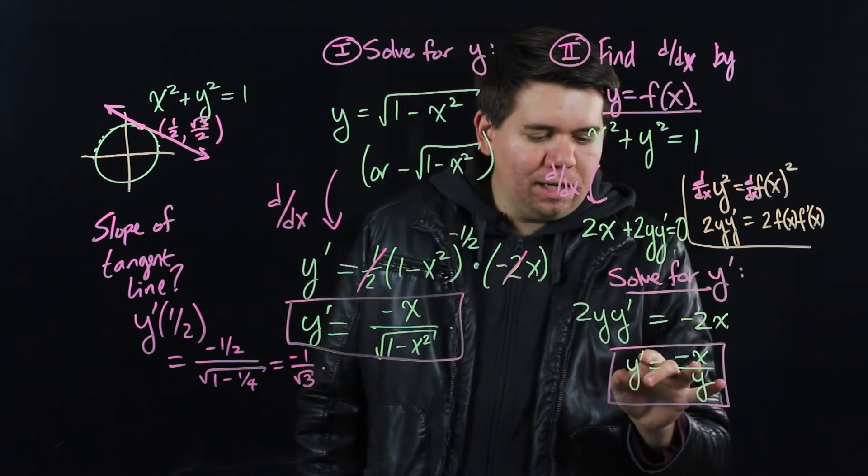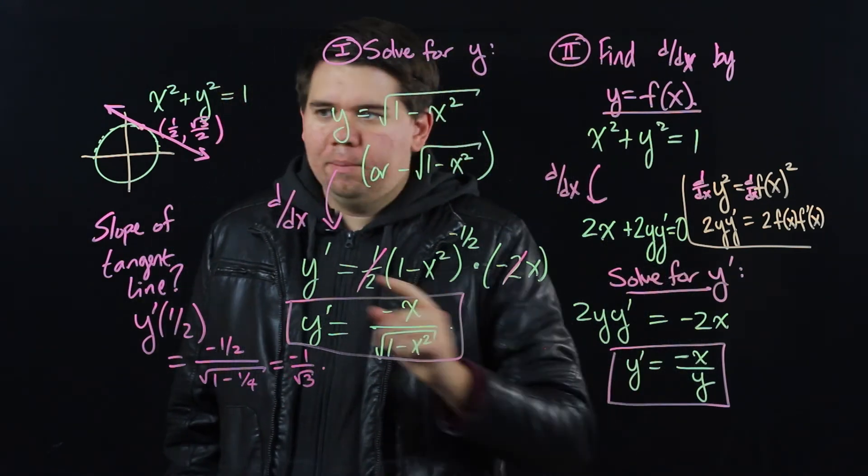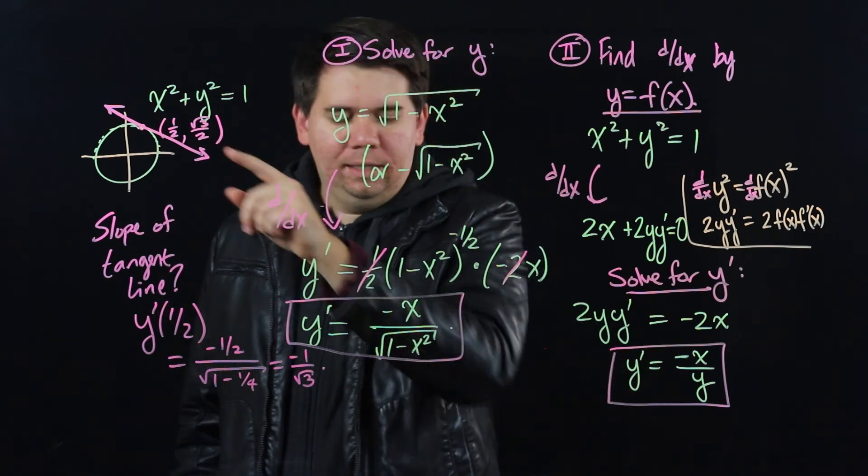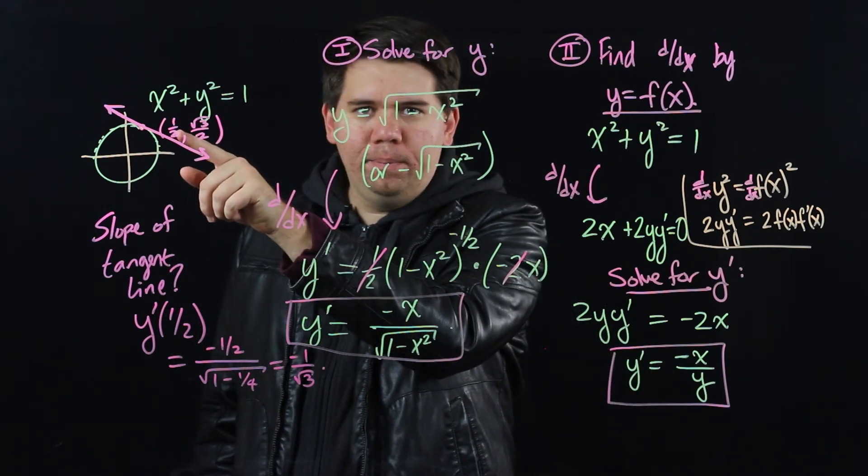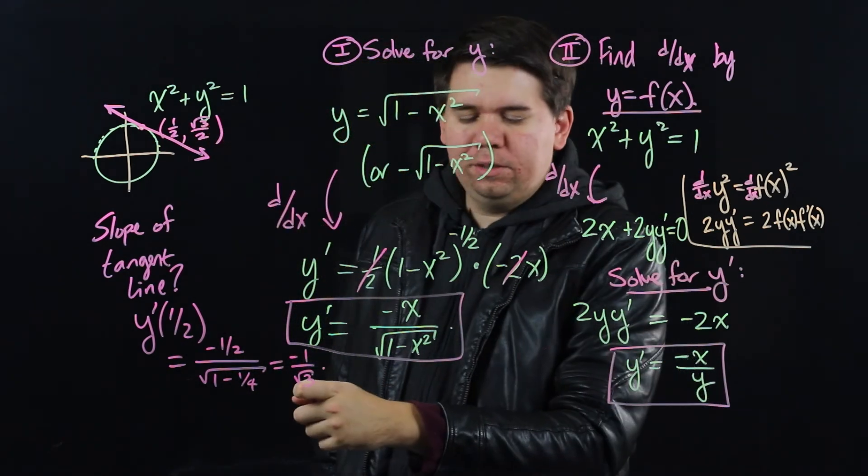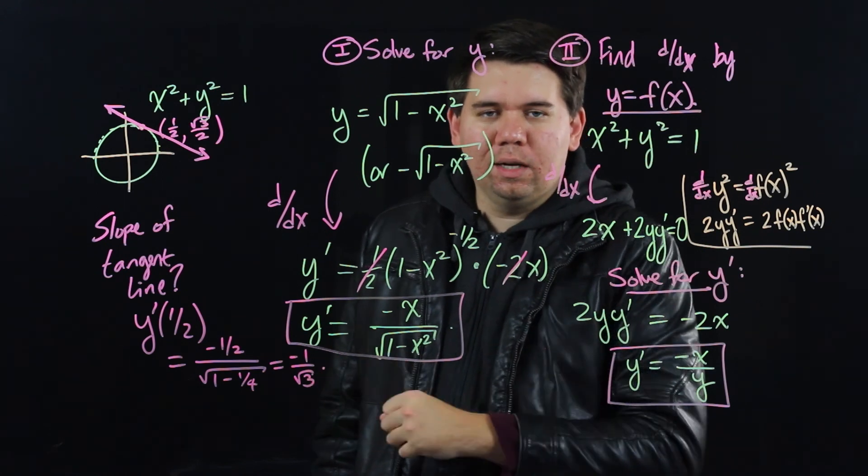This also lets you immediately calculate the derivative. If I want to find the slope of the derivative, I just plug in my x value and my y value. I get negative 1/2 on top and then on bottom, √3 over 2, which simplifies to the same thing, negative 1 divided by the square root of 3.